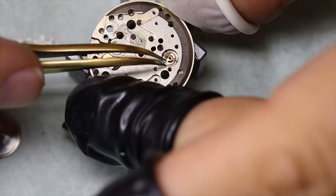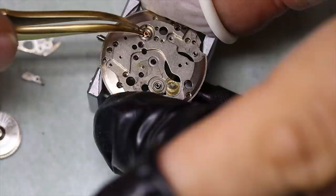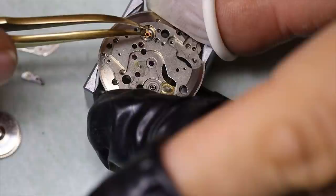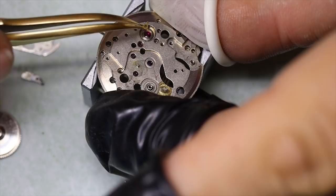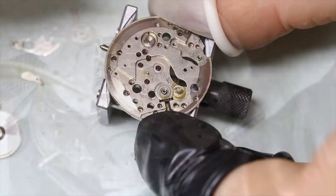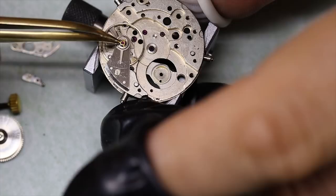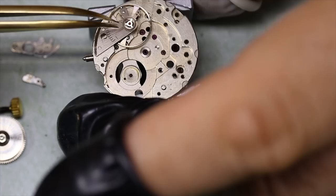The shock system is also not that common to see, unless you work on Junghans watches, that is, because this is a proprietary Junghans shock system. It's actually quite good. You have this three-pronged little spring, and then you have a big jewel. And you have more oil.